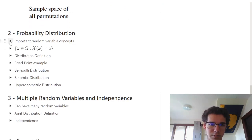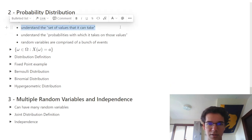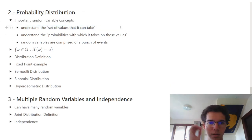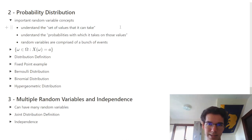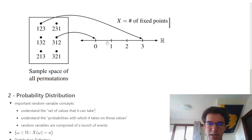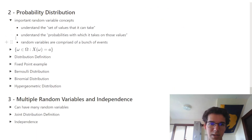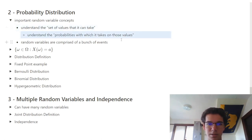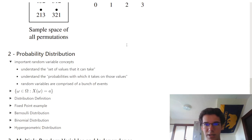Now we're going to close in further and think about some important things when talking about random variables. We want to know the set of values that X can take on, and we also want to understand the probabilities with which each of those values occurs.